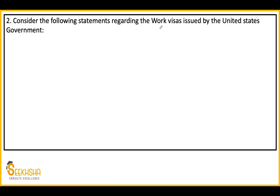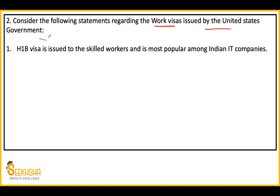Next question: Consider the following statements regarding work visas issued by the United States government. These work visas are running quite a lot in the news because, like COVID spread, the United States told non-immigrant visa holders that they have been banned. First statement: The H-1B visa is issued to skilled workers. This is one of the most popular types of visa among Indian IT companies. Then there is the L-1 visa — this allows companies to transfer highly skilled workers to the USA for a period of up to 7 years.